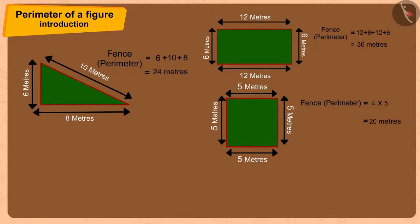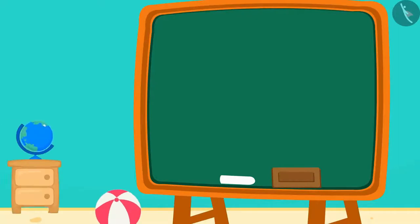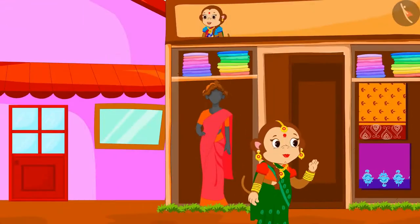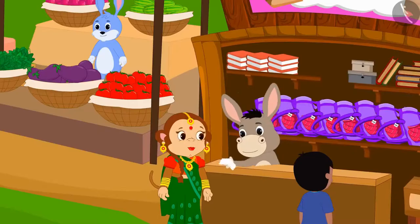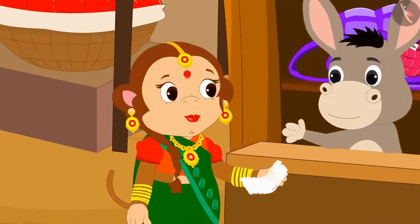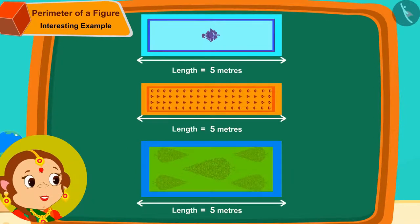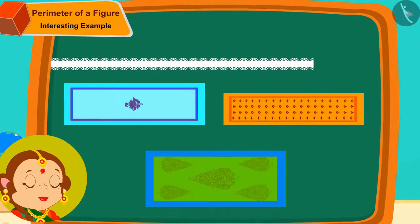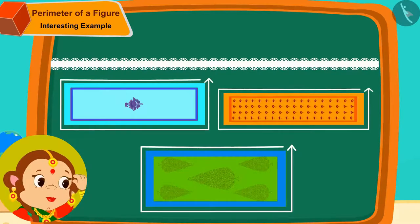Hello children. In the last video we learned about the perimeter of a figure. In this video we will learn more through interesting examples. Banno has started selling designer bedsheets along with sarees. She thought of putting beautiful laces on the edges of the sheets, so she bought a 14 meter long lace from the market. All her sheets are 5 meters in length but of different widths. On which bedsheet should she put this 14 meter lace so that no lace is left over and none is short?